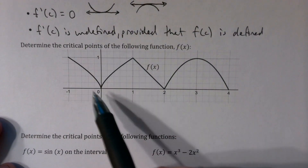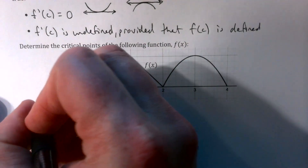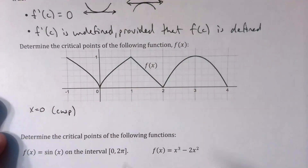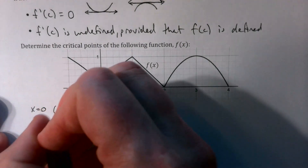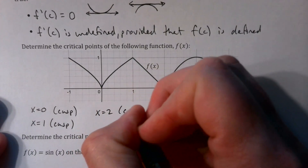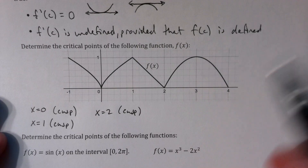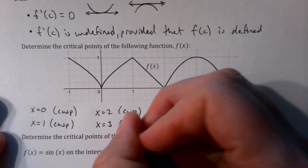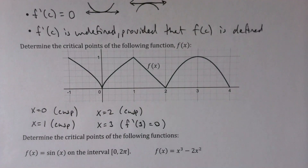Looking at a graph to determine critical points: at x = 0, f′(0) is undefined because of a cusp, but f(0) exists, so x = 0 is a critical point. Similarly, at x = 1 and x = 2, we also have cusps giving critical points. Then at x = 3, there's no cusp — it's a smooth curve — but f′(3) = 0 because the tangent line is horizontal. So we have critical points at x = 0, 1, 2, and 3, all corresponding to extrema on the graph.